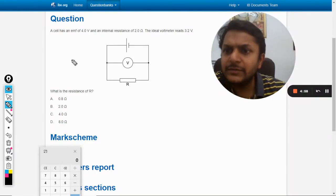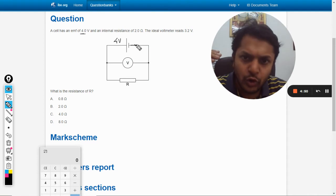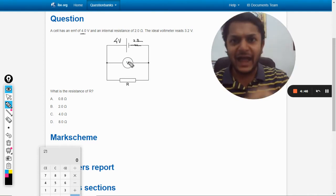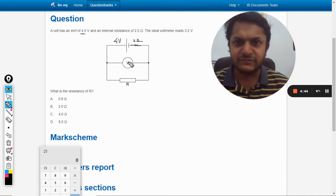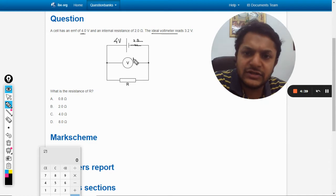Okay, so in this question a cell has an EMF of 4 volts and an internal resistance of 2 ohms. There is no resistance shown here, so that is why I have added another resistance in series with it, that is 2Ω. The ideal voltmeter, so voltmeter is ideal, so resistance is infinity.